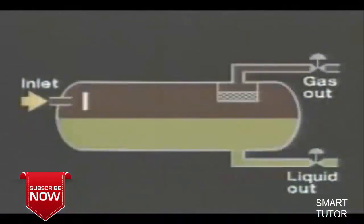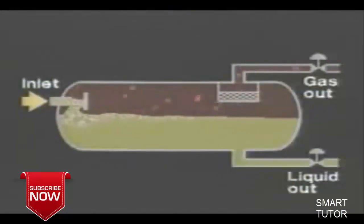Here we see a simplified schematic of a typical horizontal separator. The fluid enters the separator and hits an inlet diverter, causing a sudden change in the fluid's velocity and direction. The initial gross separation of liquid and vapor occurs at this point.